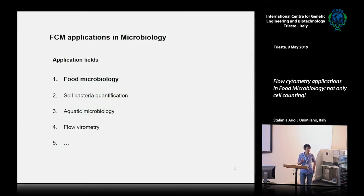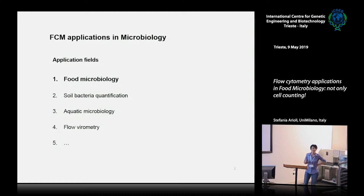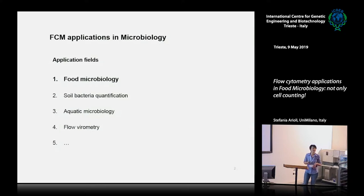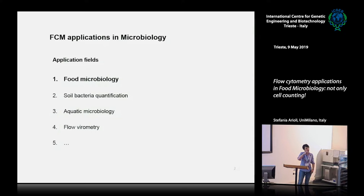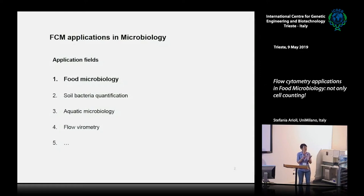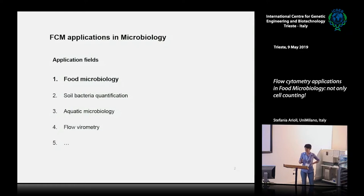Flow cytometry can find applications in general microbiology in different fields. For example, for the quantification of bacteria in a soil sample, or in aquatic microbiology — in Switzerland, flow cytometry is used for continuous microbiological monitoring of tap water. There is also flow virometry for the detection of viral particles in a sample. Besides food microbiology, we have many different applications in microbiology.